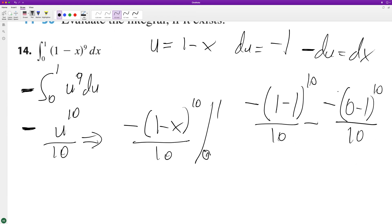So this whole thing becomes zero minus negative, negative one raised to the 10th is just equal to one divided by 10. Because these cancel each other out, we just end up with one over 10 and that's it.